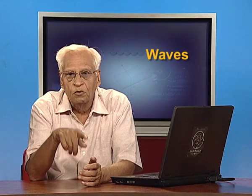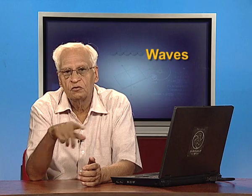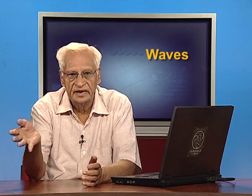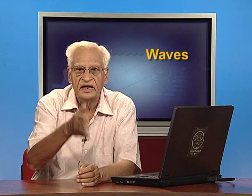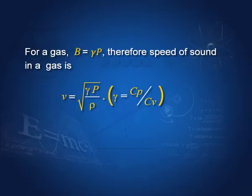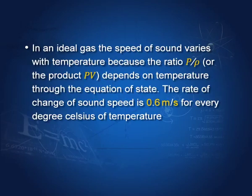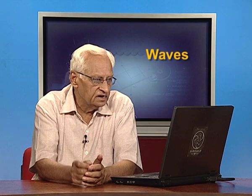Boyle's law states that pV equals constant at a given temperature, so p and V change accordingly and p by rho remains constant. In an ideal gas, the speed of sound varies with temperature because the ratio p by rho depends on temperature through the equation of state.